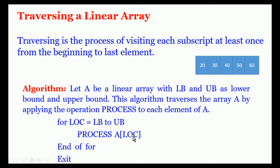It processes A[1], then loc = 2, processes A[2], continuing up to loc = 4, processing A[4]. It then returns to the end of the for statement. Since there are no more elements, it exits the loop — it exits the traversing process.